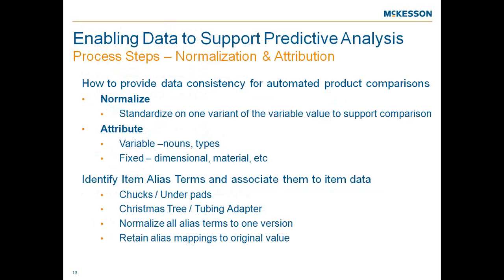Then we need to fully attribute the data consistently. We need variable nouns, types, and fixed or dimensionable attributes. From a product family perspective, it's easy to normalize on noun and type: 'bone screw,' 'surgical glove.' For surgical gloves, fixed attributes include size, latex content, powder content, cuff type, fingertip texture, thickness, and sterility. All of those fixed dimensions can be applied to that product family, giving you the ability to look at things in greater detail based off those variable nouns and types with fixed dimensional attributes applied against them.